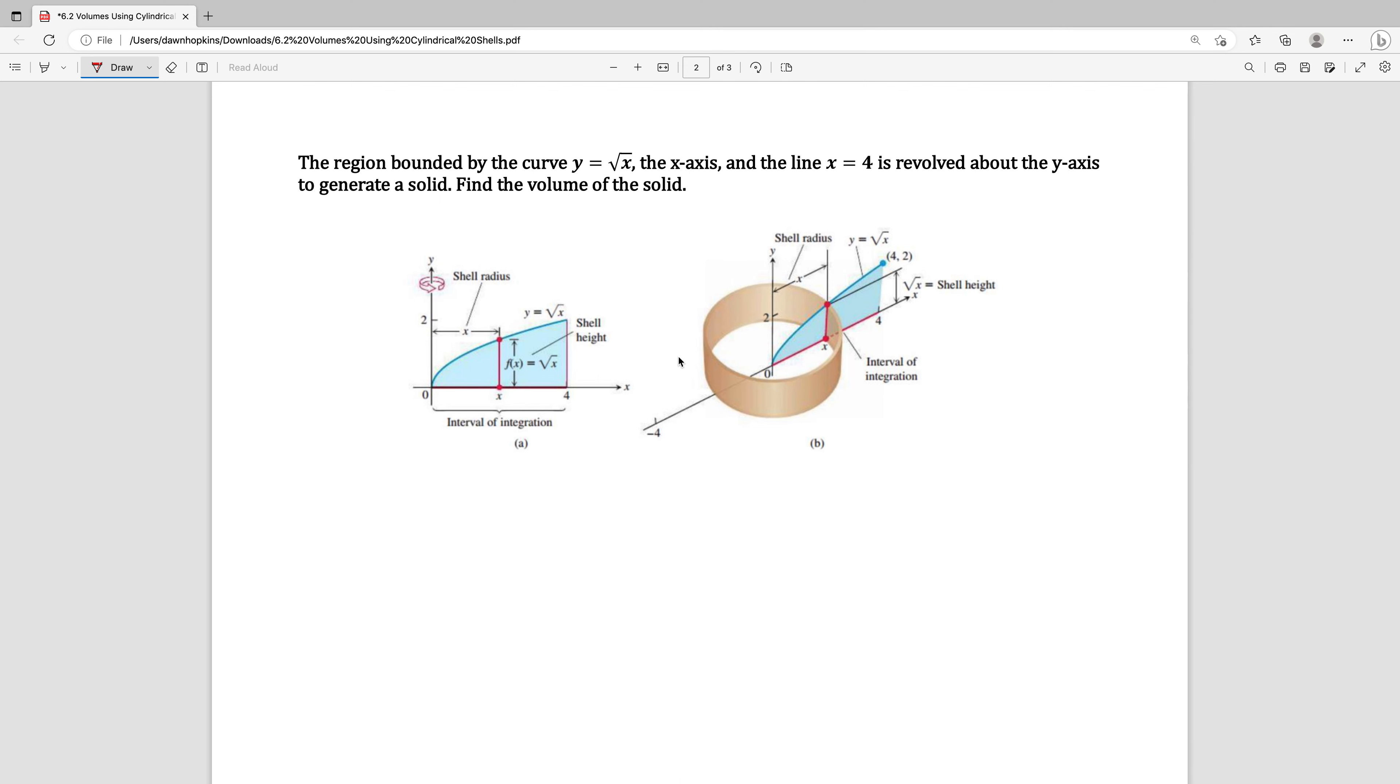For the first one we are looking at the region bounded by Y equals the square root of X. That's the curve. The line X equals 4, and the X axis. So it's this blue shaded region. And it's going to be revolved about the Y axis.